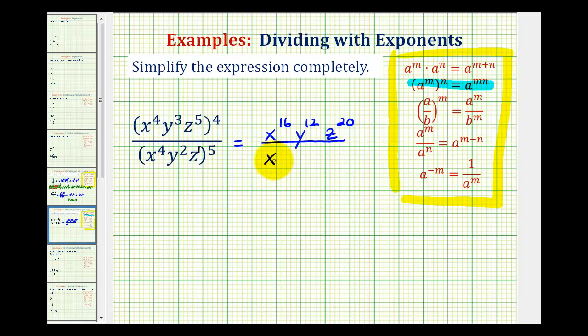So we'd have x to the power of four times five, that's twenty, y to the power of two times five, that's ten, and z to the power of one times five, which would be z to the fifth.